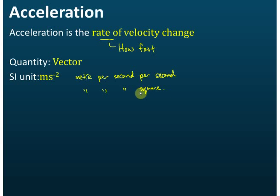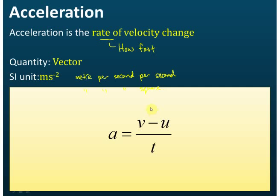The formula for acceleration is: a = (v − u) / t, where a is acceleration, v is final velocity, and u is initial velocity.